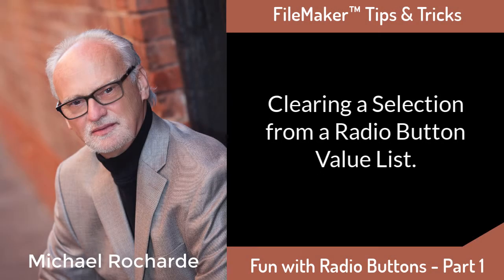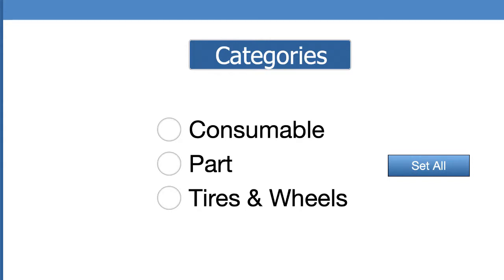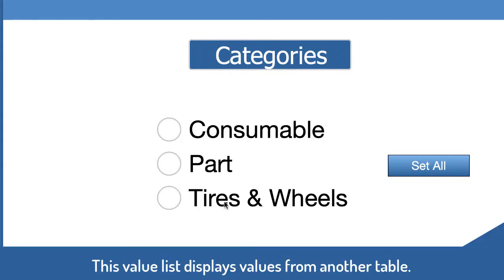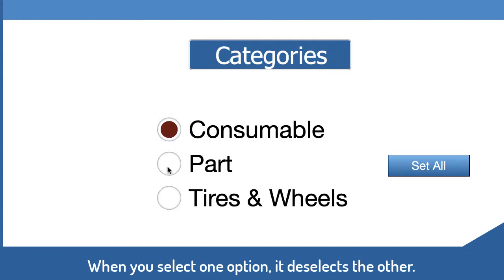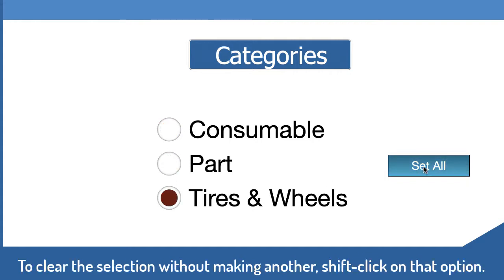Hello, I'm Michael Rashad. In this video we're going to talk about radio buttons. A radio button is a value list that allows you to select a single value. Right now we're looking at one with categories — the value is coming from another table called categories, and we have three options: consumables, parts, and tires and wheels. As you select one, it deselects the other — that's a radio button.